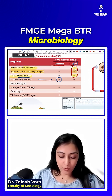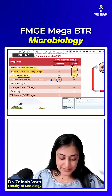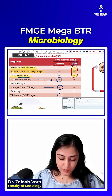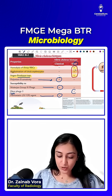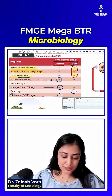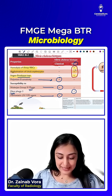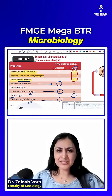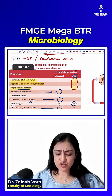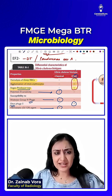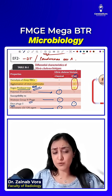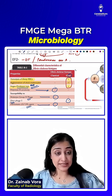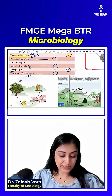For classical biotype, we are giving it Polymyxin B sensitivity and phage positivity — El Tor obviously will not have these. Remember: all other properties belong to classical, except El Tor. So just remember — El Tor 'tod raha hai' (is breaking everything), and VP test is the only positive thing to remember for El Tor. Everything else is classical type. This is V. cholerae.